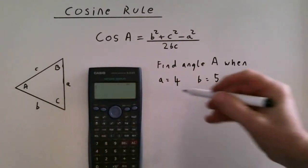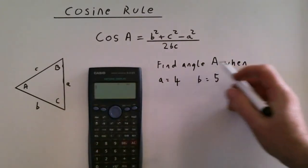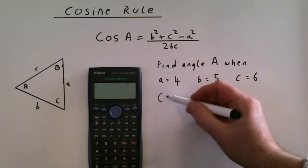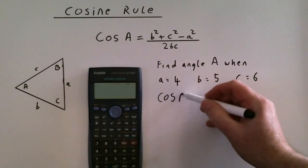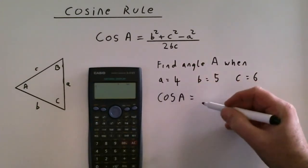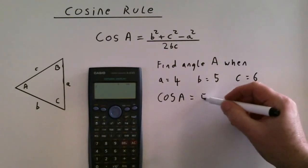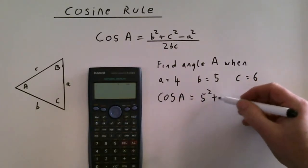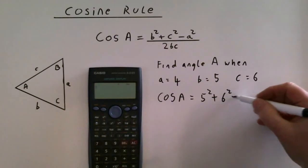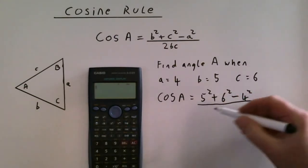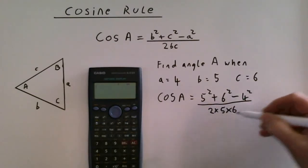We'll put it in and see what we get. We're going to find angle A. So first we've got to work out the cosine. Cosine of A equals 5 squared plus 6 squared minus 4 squared, all over 2 times 5 times 6.